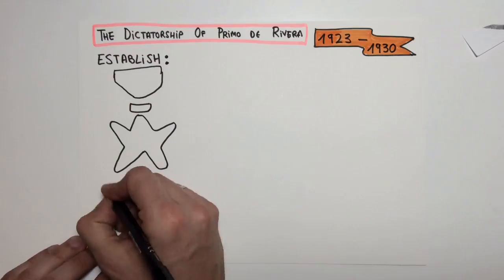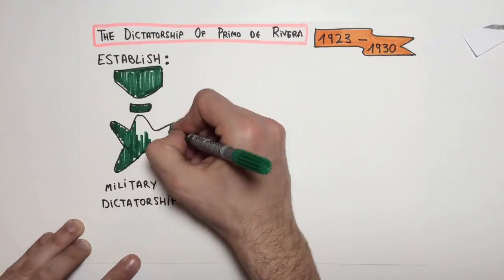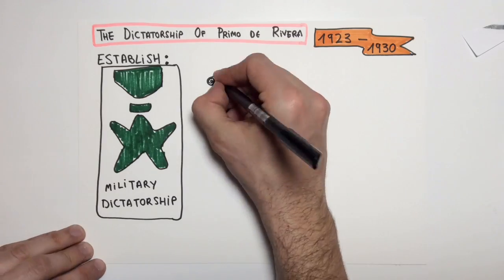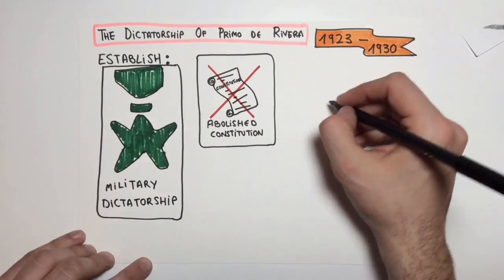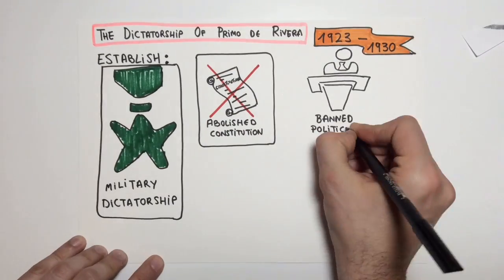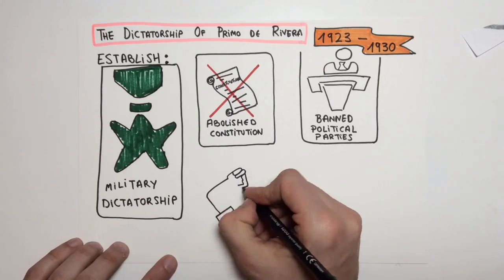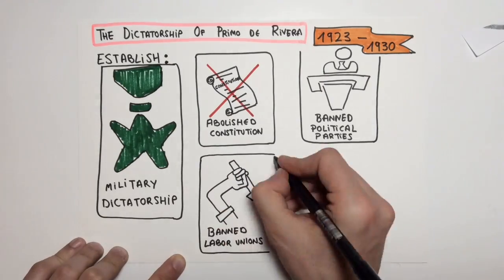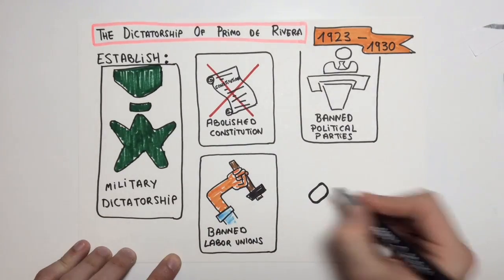Primo de Rivera established a military dictatorship. He abolished the constitution. He banned all the political parties. He also banned all the labor unions.